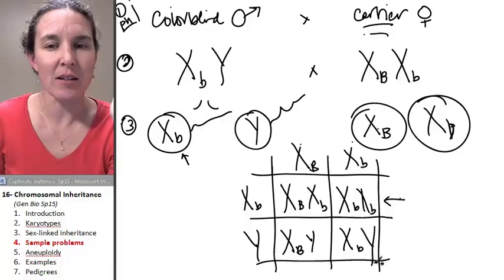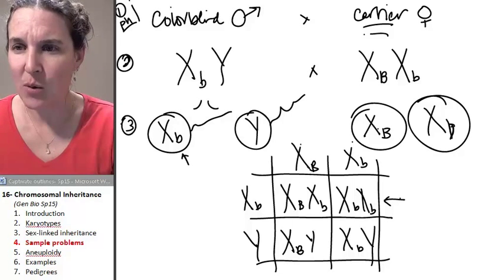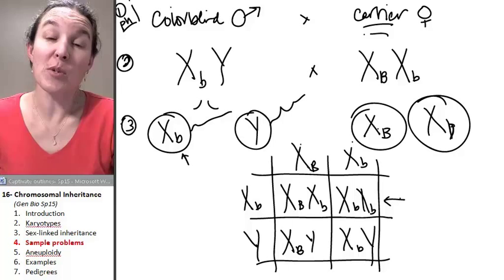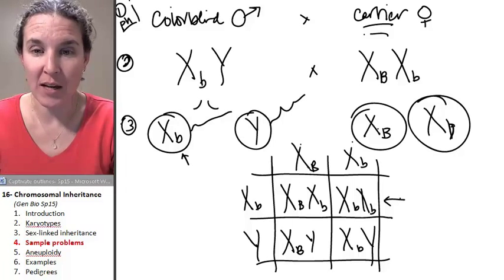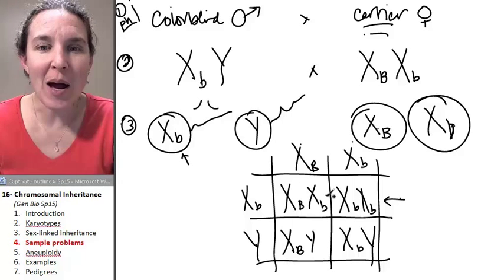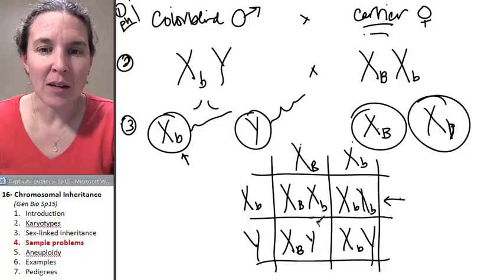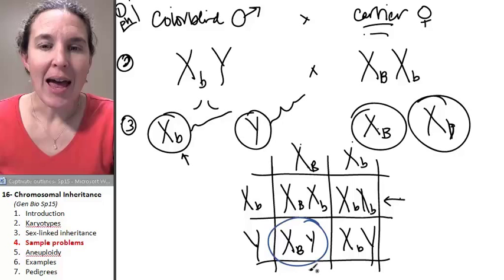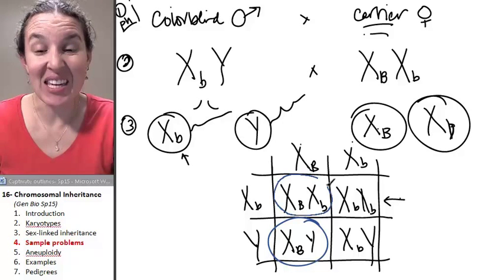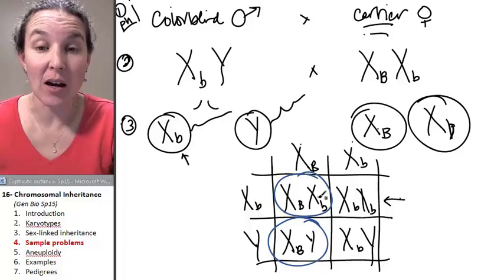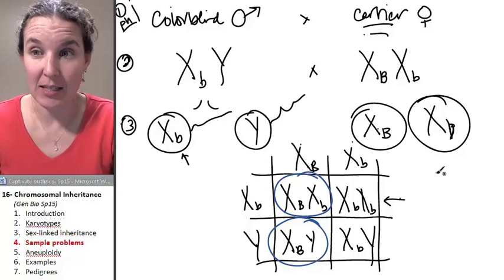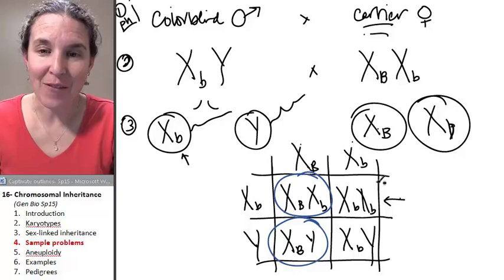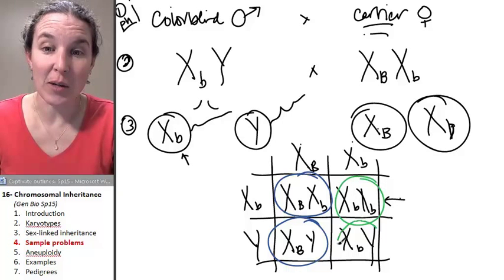Let's see, what are our phenotypes? 50% girl, 50% boy. That's going to be the case all the time. But of my boys, half of my boys, half of my kids are going to be non-colorblind kids, and half of my kids are going to be colorblind.